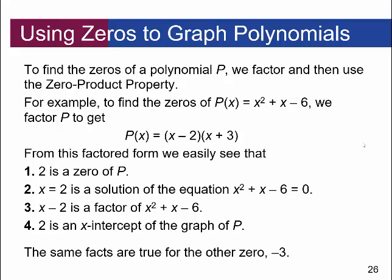To find zeros of a polynomial p, we factor and then use the zero product property. For example, find the zeros of p of x equals x squared plus x minus 6. We factor p to get x minus 2 times x plus 3. Setting each factor equal to zero: x minus 2 equals zero gives x equals 2, and x plus 3 equals zero gives x equals negative 3. Those are the two zeros of the function — the two x-intercepts.